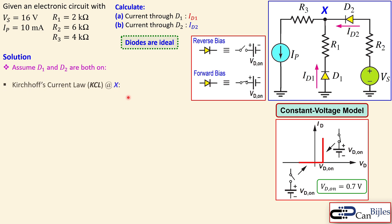Let's designate the point X here and use Kirchhoff's current law at node X. The current flowing here, which is IP, is produced by ID2 and ID1. So we can say IP is ID1 plus ID2. ID1 is minus VD on one minus VX over R1, and ID2 is VS minus VD2 on minus VX over R2.